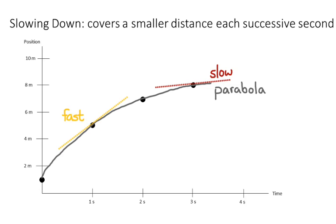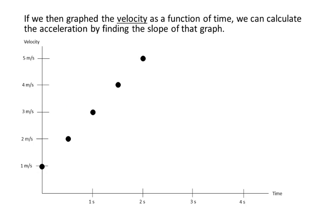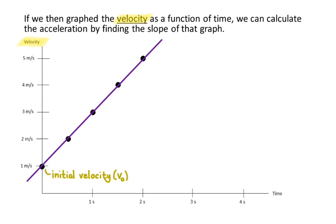Another way to analyze motion with changing velocity is to create a graph of velocity versus time. There are a couple of things we can find from this graph. The first is acceleration. The y-intercept tells you the starting velocity of the object at time zero — the initial velocity, indicated by the symbol v with subscript zero. We can find the acceleration, given the symbol a, simply by finding the slope of the graph, which is change in velocity divided by change in time.